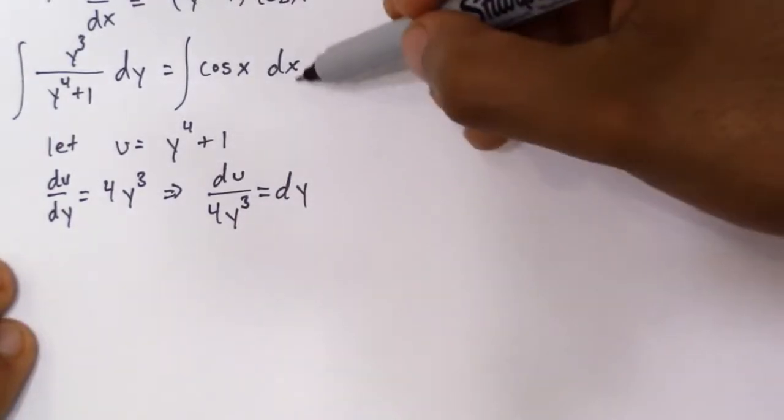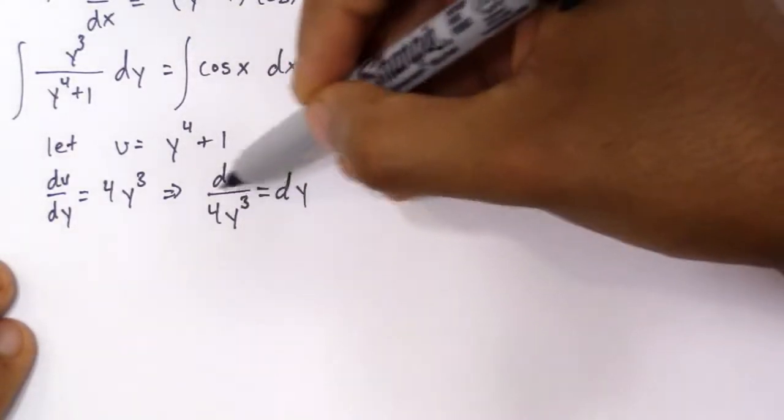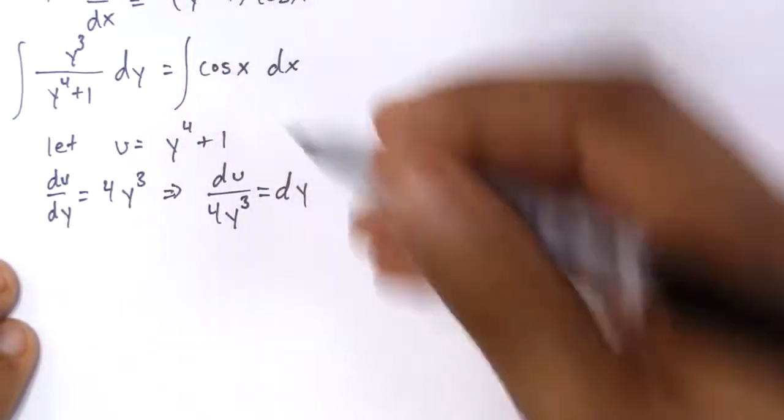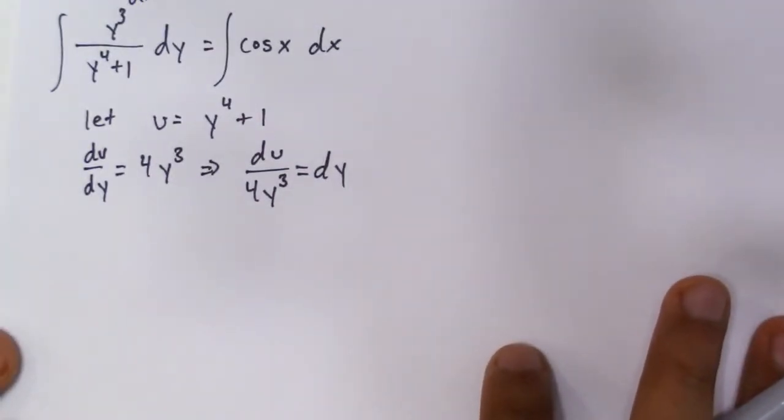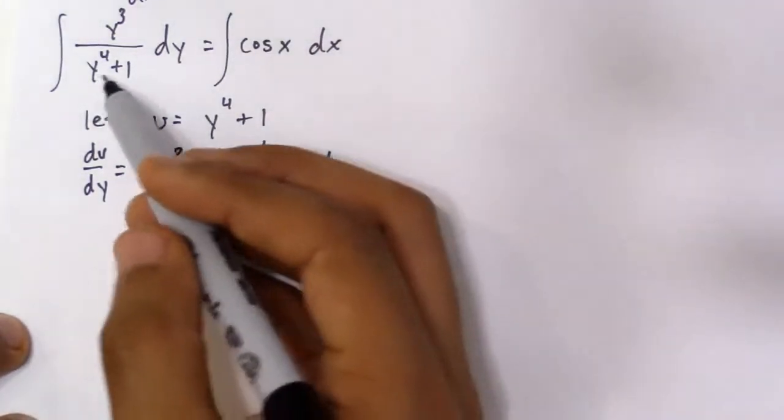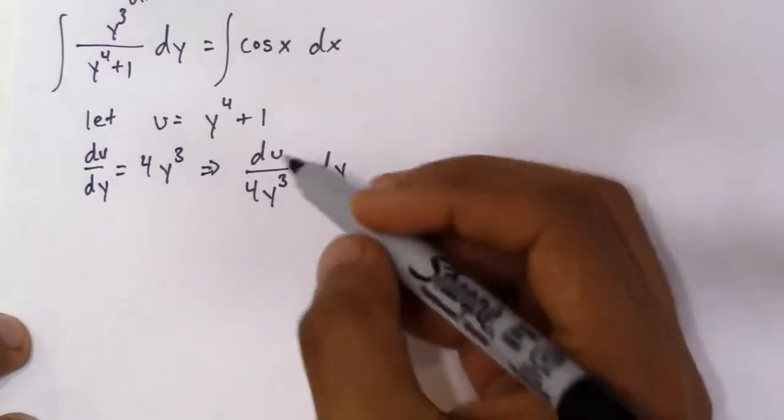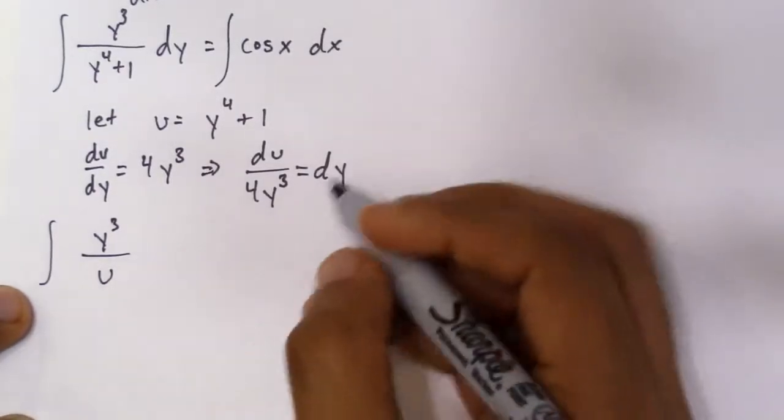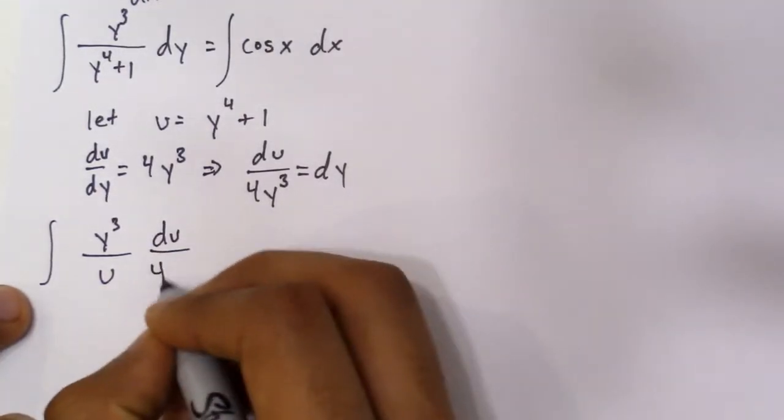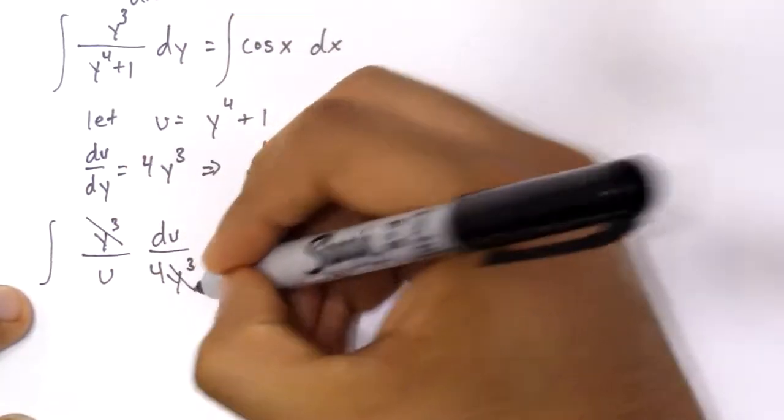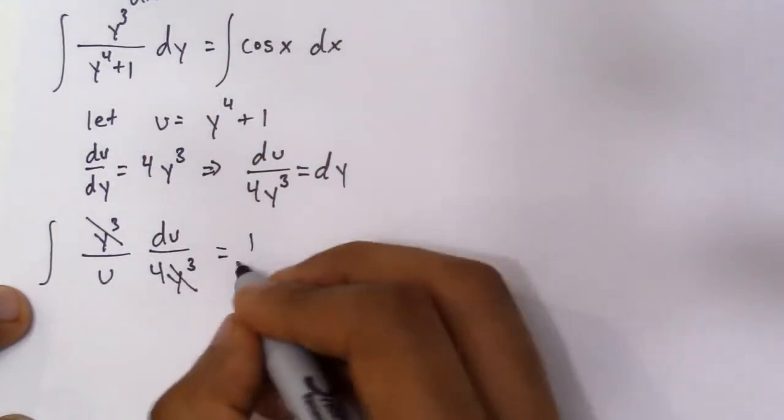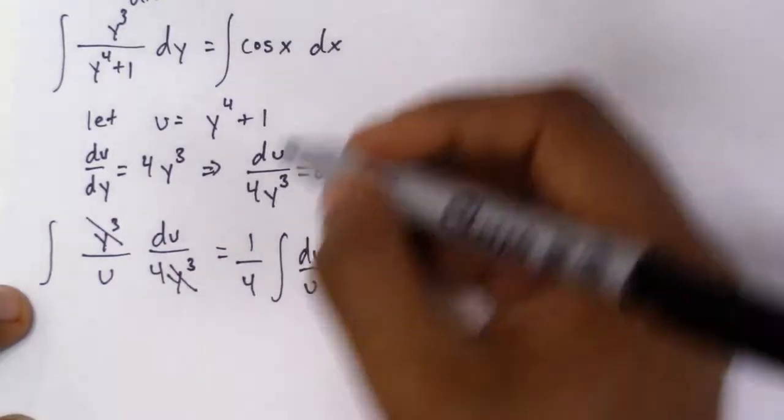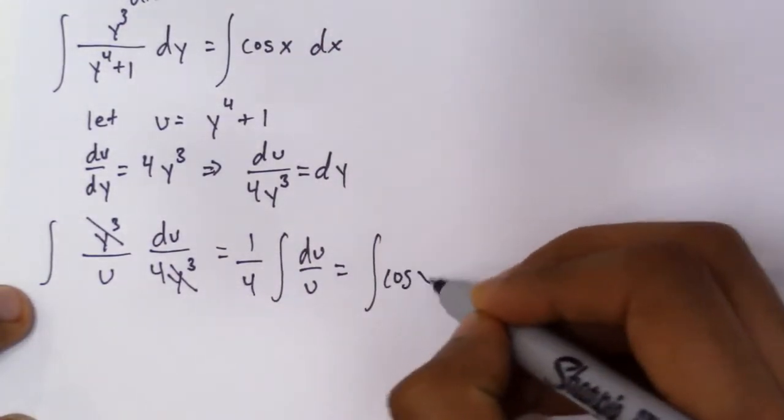All we have to do is plug in this du over 4y³ into here. Since we said that y⁴+1 is u, we can plug in u right here. So it's going to be y³ over u, dy is du over 4y³. These cancel, which equals 1/4 integral of du/u, which equals integral of cos x dx.